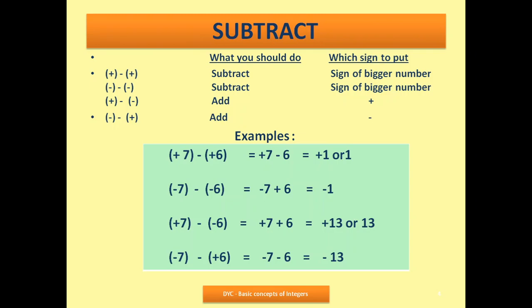Next: plus 7 minus of minus 6. Minus times minus is plus. So it becomes plus 7 plus 6 — simply add, no danger: answer is 13. Last case: minus 7 minus of plus 6. Minus times plus is minus. So the result is minus 7 minus 6. I will add 7 plus 6 is 13, but I put the sign of minus, giving minus 13.